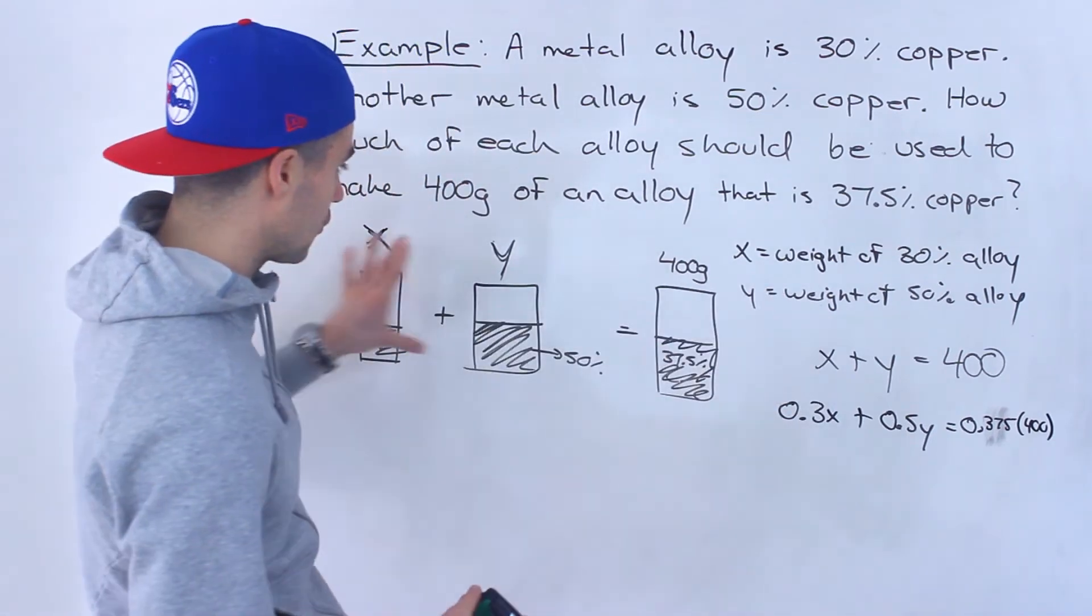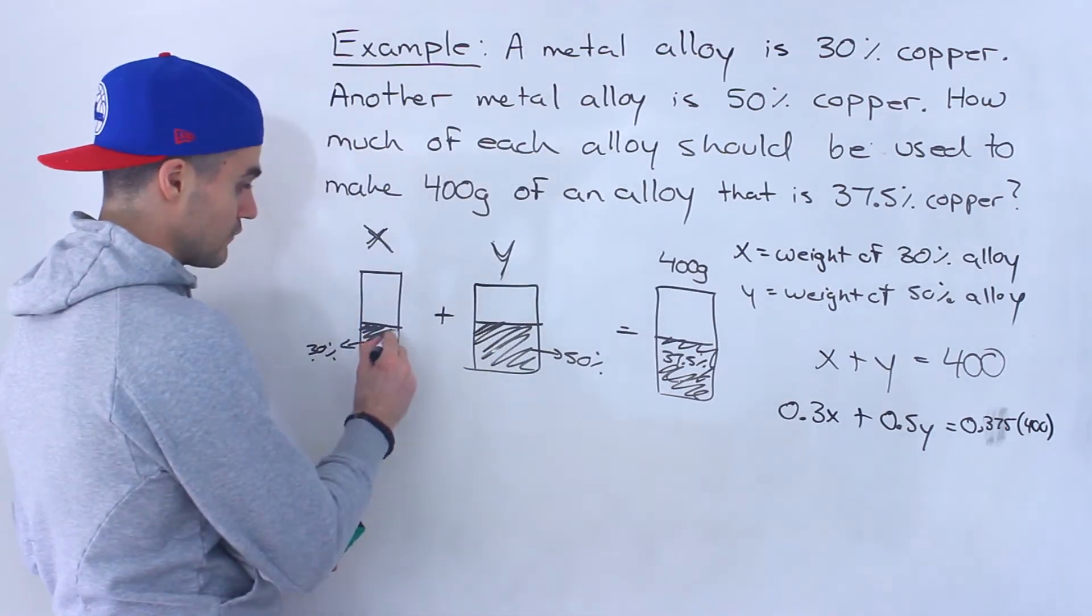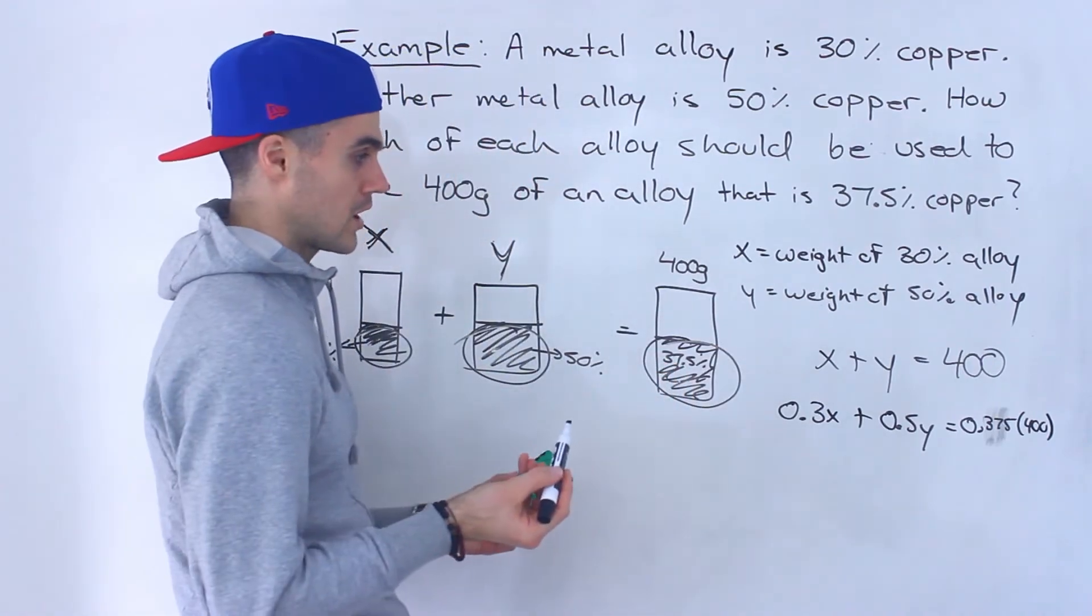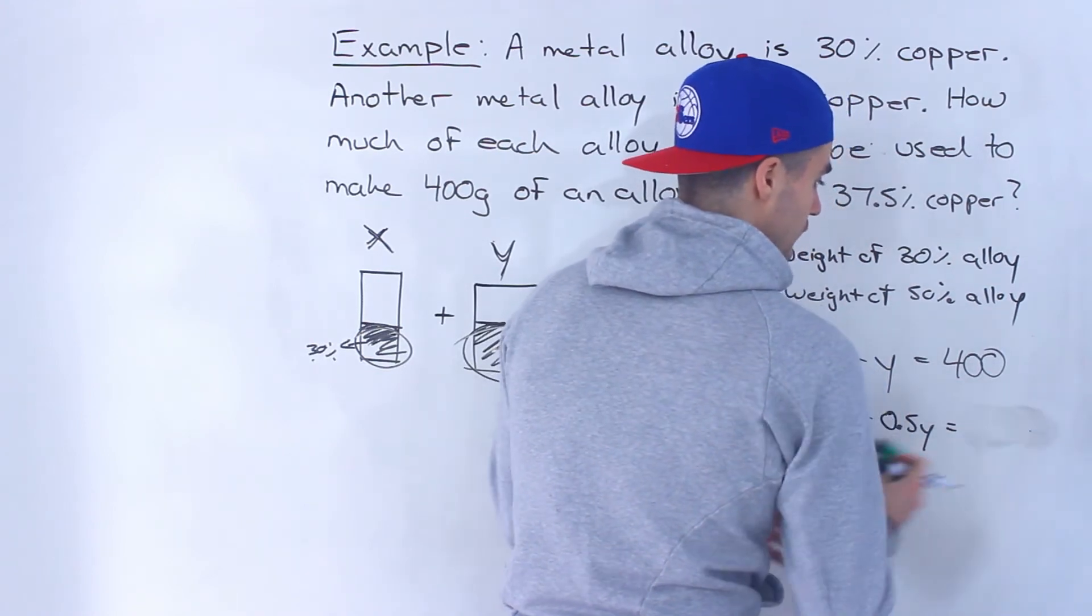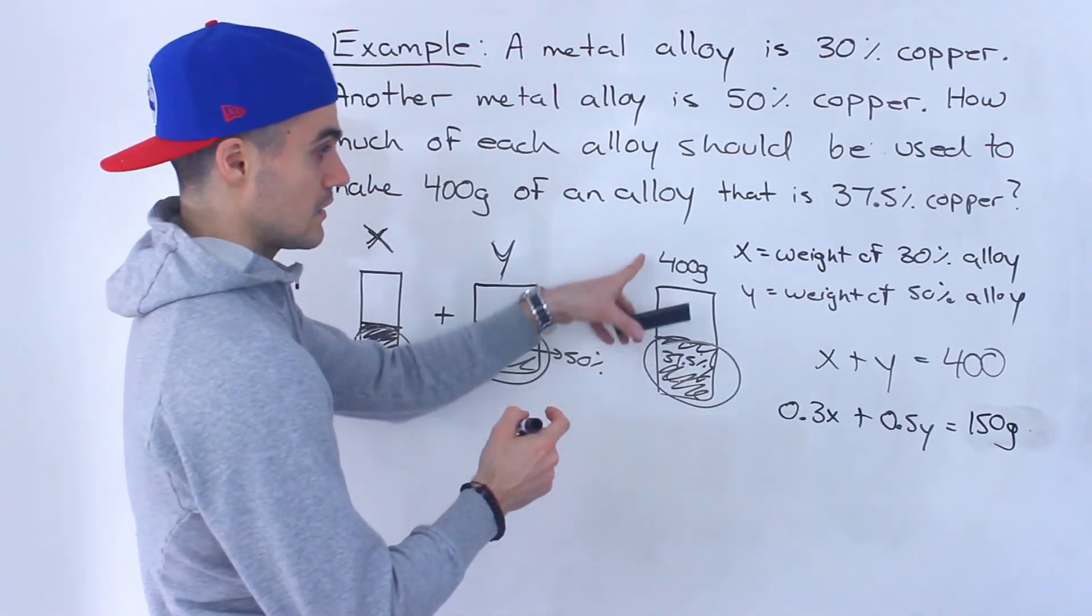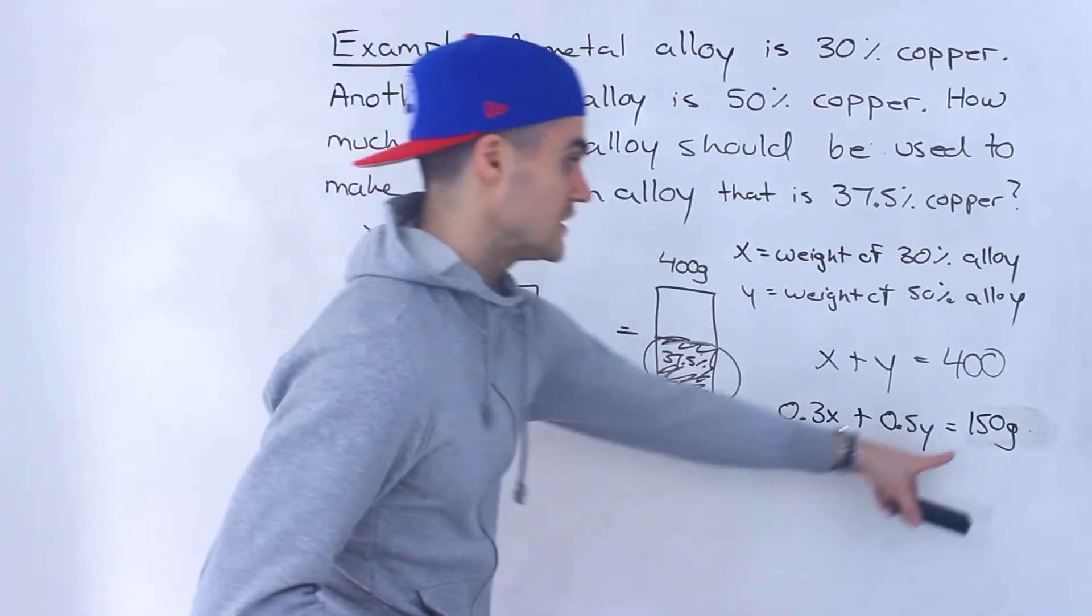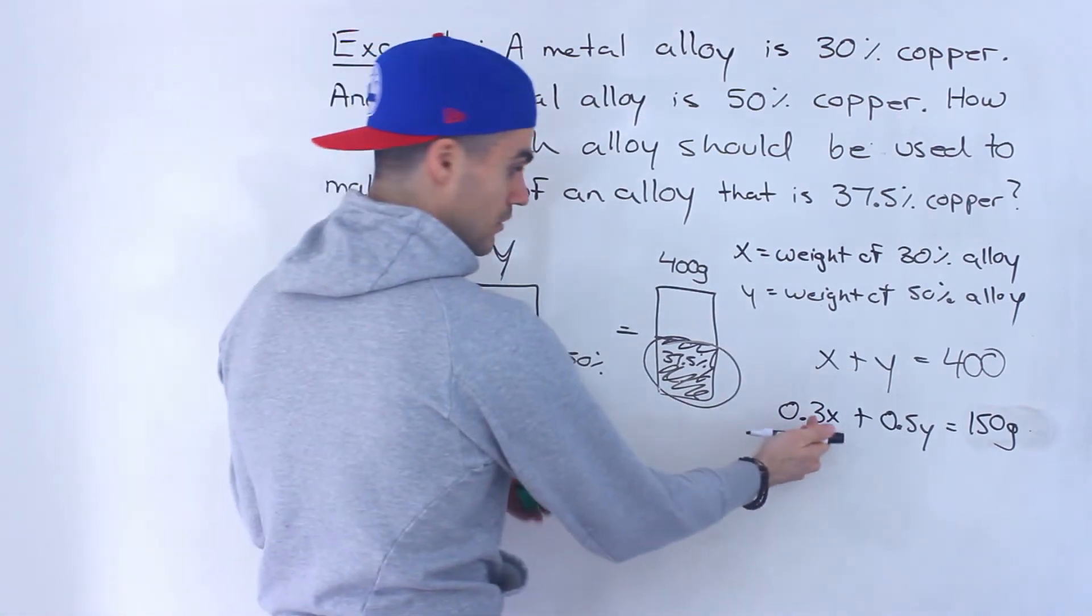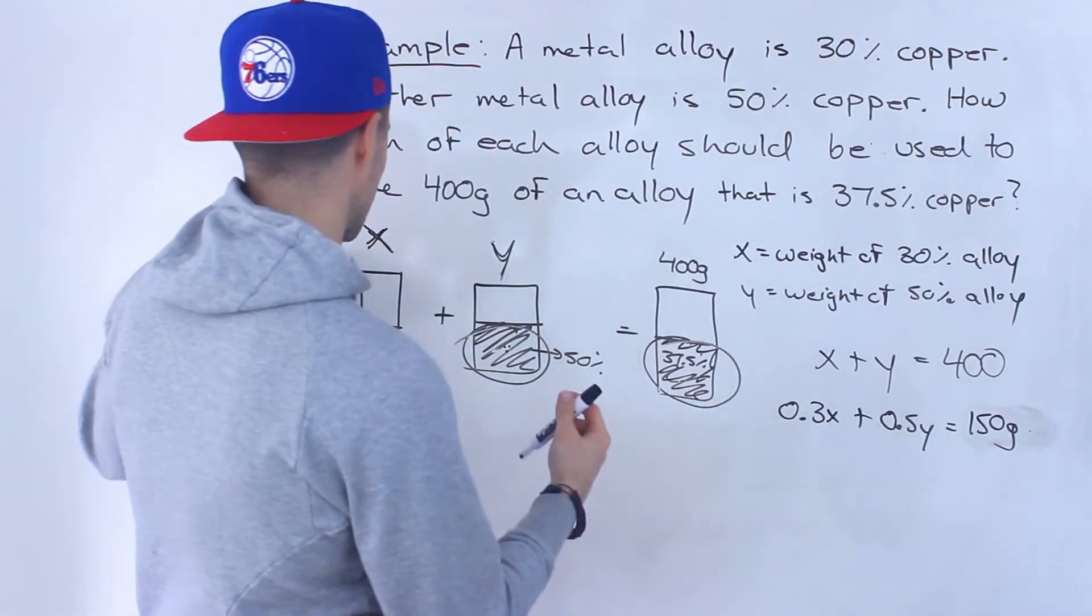So this equation deals with the total weights and then this equation here deals with the copper weights, because the weight of this amount of copper plus the weight of this amount of copper has to equal the weight of that amount of copper. And we can actually multiply these, 0.375 times 400 would actually just give us 150. So it's 150 grams, 37.5% of 400 is 150 grams, so of the total of 400 grams, 150 grams is going to be the copper. And now notice that we got our 2 equations.